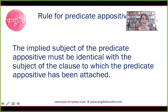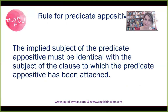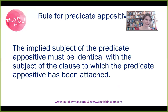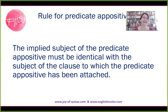So, what is the rule for a successful predicate appositive? The rule is very simple. Every predicate appositive has an implied subject, and this implied subject must be identical with the subject that is stated in the clause to which the predicate appositive has been attached. Easy peasy. Yet, even though this is so easy, this rule often gets violated. But once you're aware of it, you won't ever violate it again — at least you'll catch it when you do your revisions.